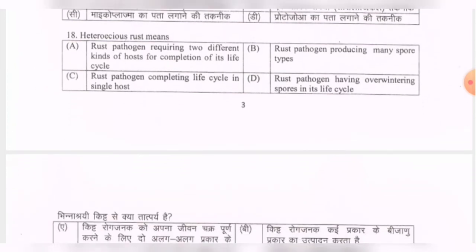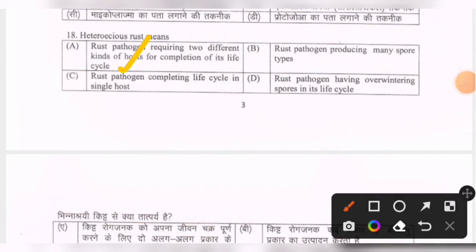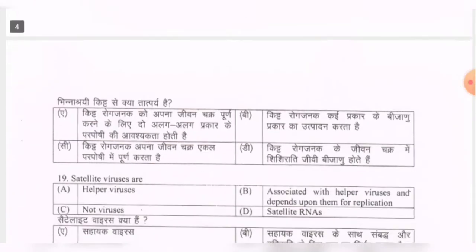Next question: heteroecious rust means — options are rust pathogen requiring two different kinds of hosts for completion of its life cycle; rust pathogen producing many spore types; plant pathogen completing life cycle in single host; or rust pathogen having overwintering spores. The correct option is the first one — requiring two different hosts.